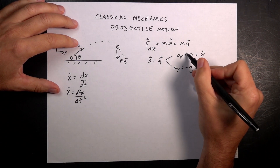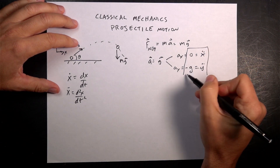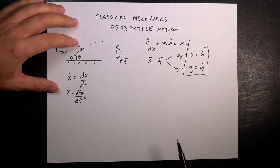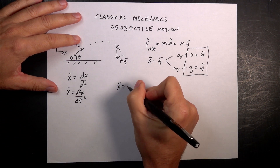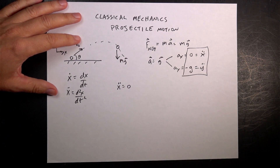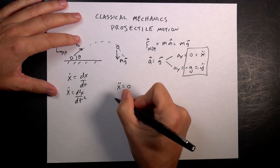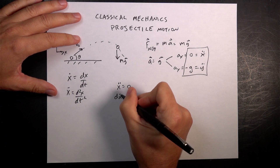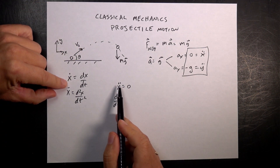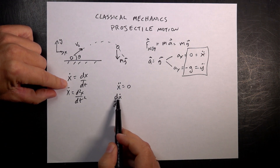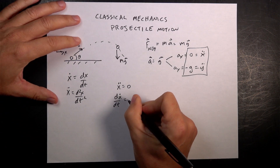So I actually have two differential equations that I can solve. Let's start with the x direction: x double dot equals zero. I'm going to write this as the derivative of x dot with respect to t, because one dot means the derivative with respect to time. So I can convert that into just a derivative, and now I have this differential equation.